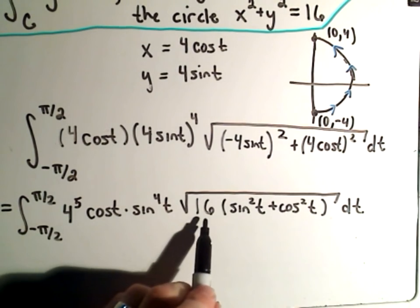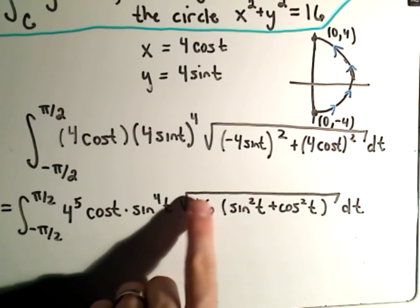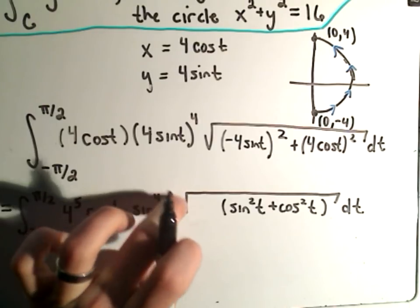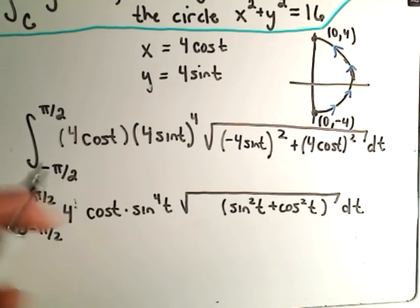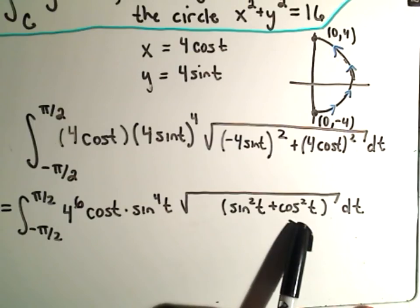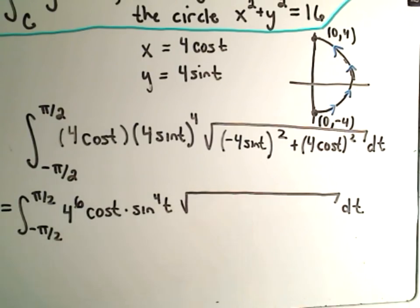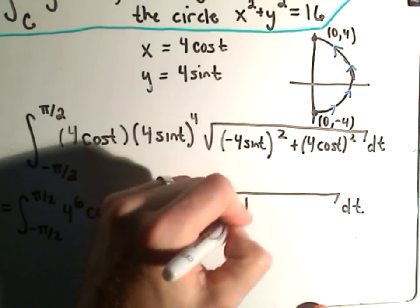And remember if you have something under a square root, you can just pull it out. So the 16 I'm going to pull out, it's going to come out as another 4. But if I multiply that by the 4's that I have out front, I'll get a 4^6 power left over. So at this point, I'm left with sin^2 + cos^2 underneath the radical.